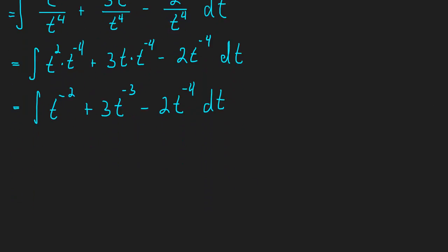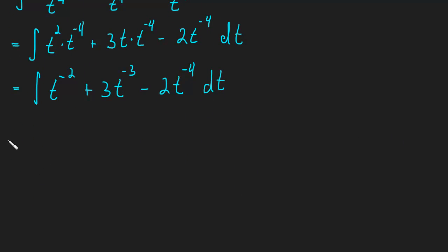Okay, and now we've gotten to a point where we are ready to integrate. Okay, so t to the negative 2. So we add 1 to the exponent. So that's going to be t to the negative 1. And then we divide by that new exponent. So negative 1 plus 3. Negative 3 plus 1, of course, is negative 2. And again, we're going to divide by that new exponent, negative 2.